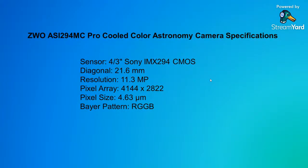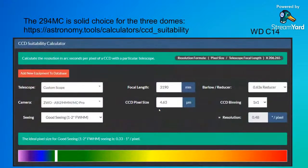The 294 MC has 4.6-micron pixels and a modest-size chip. You can look up all the details on vendors like B&H or Astromark. It's a pretty decent camera — street price is about $995. When you plug the camera, focal length, and CCD pixel size into the Astronomy Tools website, it gives you a general idea of whether your camera is going to over- or under-sample. As long as you're in the green range, it's a reasonable choice.